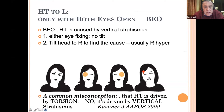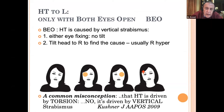Let's talk about head tilt to the left. A head tilt to the left that is only there with both eyes open is caused by vertical strabismus. With either eye fixing there is no tilt. To find out what's causing the tilt, I tilt the patient's head to the right — and it's usually a right hyper. A common misconception is that head tilt is driven by torsion. That's not true. Kushner showed very nicely about 10 years ago that head tilt is driven by vertical strabismus, not by torsional strabismus.